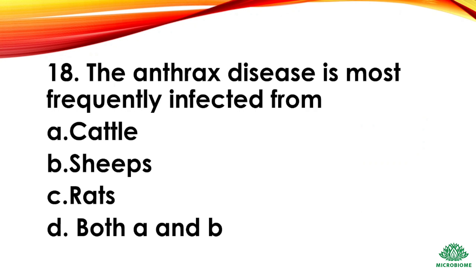Question 18: The endotoxin is most frequently sourced from — options: cattle, sheep, rats, both A and B. The right answer: option D, both A and B — cattle and sheep.